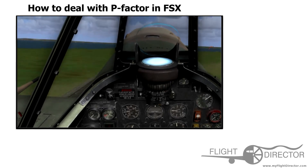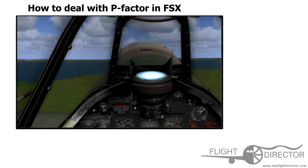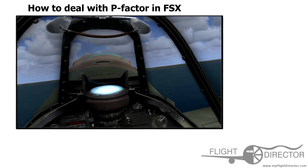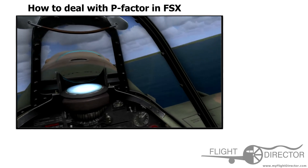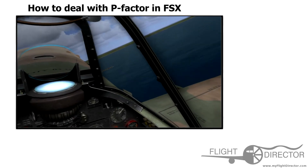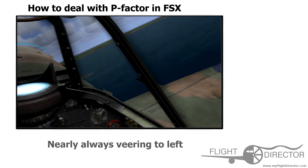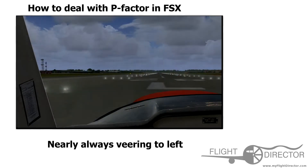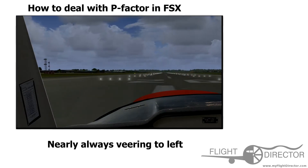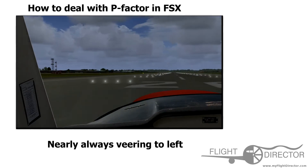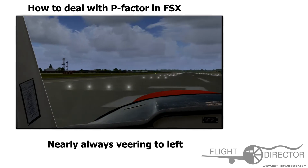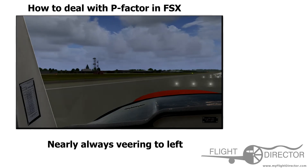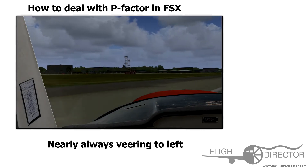What P-Factor is: if you've ever taken off an aircraft in FSX, nearly always it veers to the left without you doing anything. It can veer to the right if it's a certain type of aircraft, but they're rare. It's nearly always veering to the left.